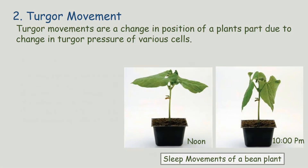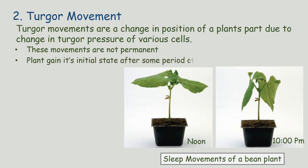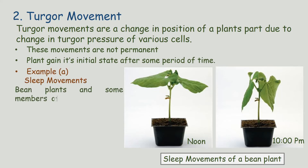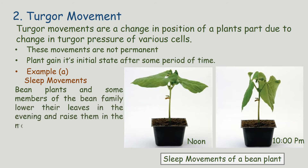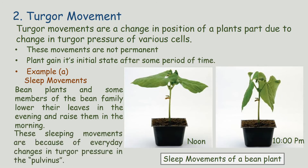Turgor movements are a change in position of a plant part due to change in turgor pressure of various cells. These movements are not permanent; the plant regains its initial state after some period of time. One example of turgor movements is sleep movement. Bean plants and some members of the bean family lower their leaves in the evening and raise them in the morning. These are referred to as sleep movements.